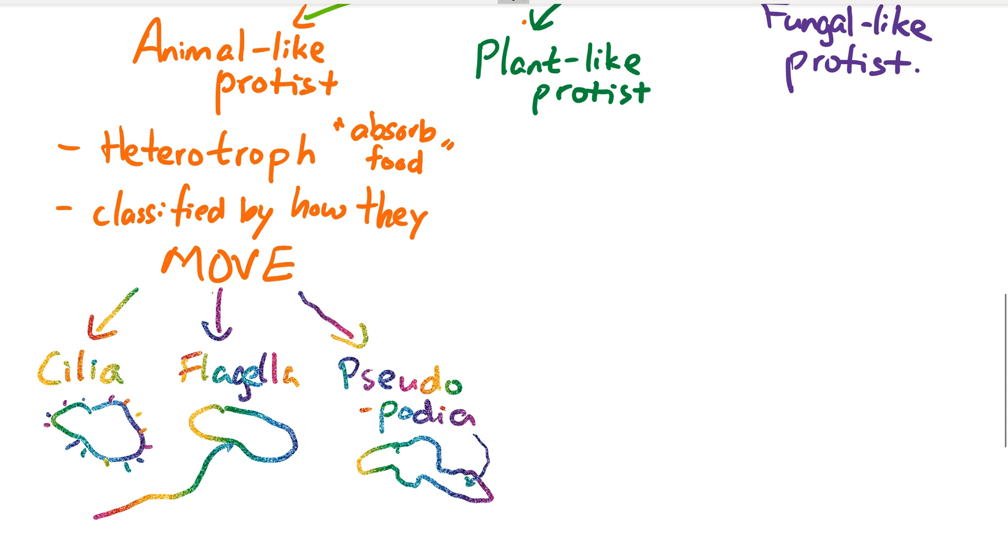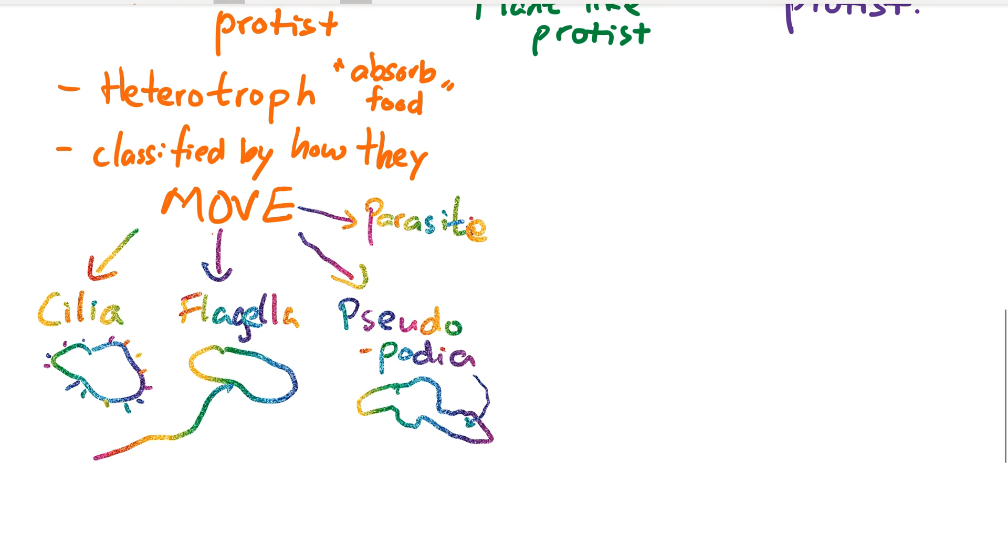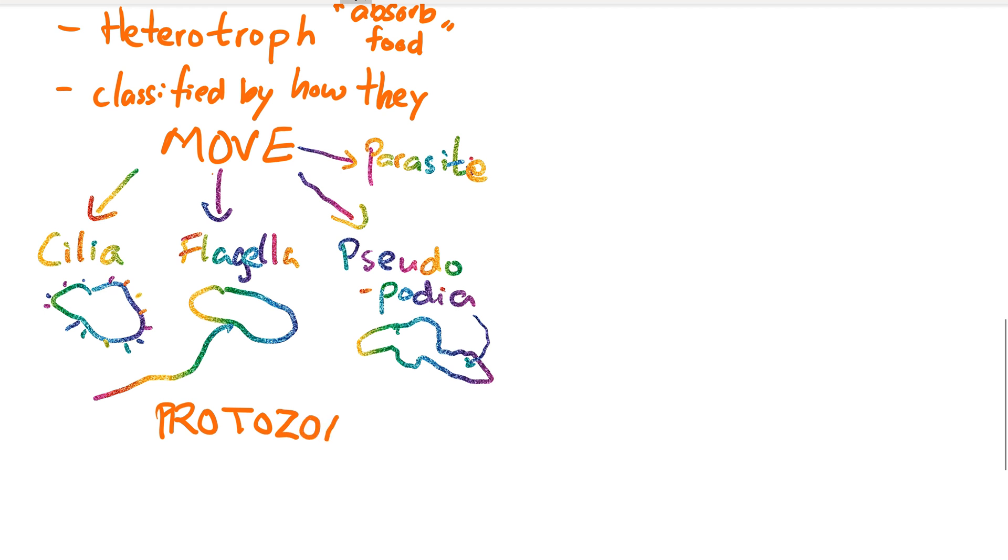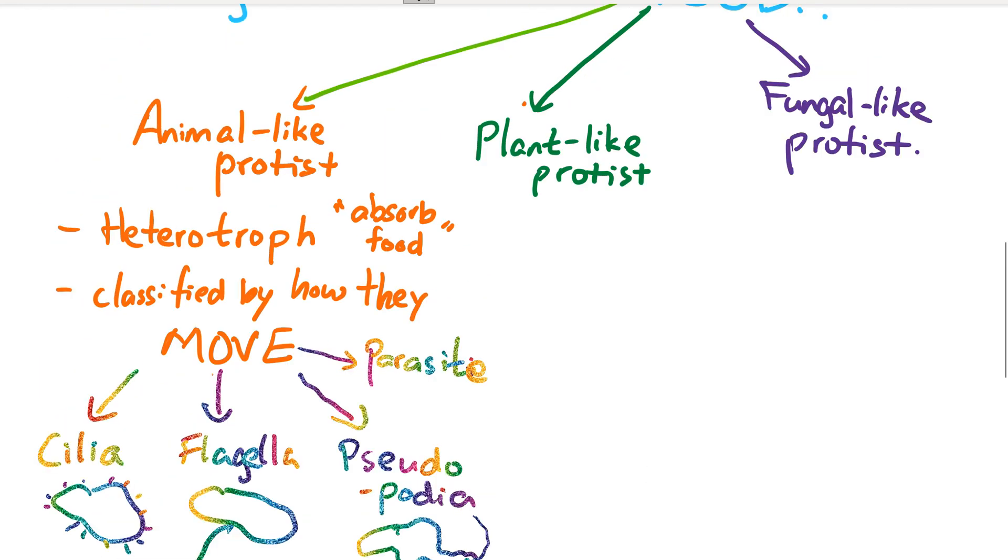The last method is as a parasite living in a host. As the host moves, it moves as well. Examples of animal-like protists, also called protozoa, include amoeba, paramecium, and euglena. Interestingly, euglena can be both heterotroph and autotroph because it has pigment and a mouth structure to ingest food, so it's a green cell like this. A classic protozoa disease caused by protists is malaria.